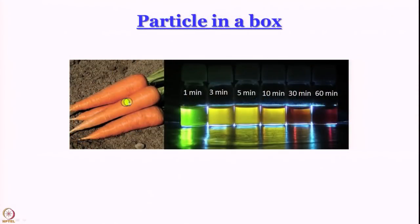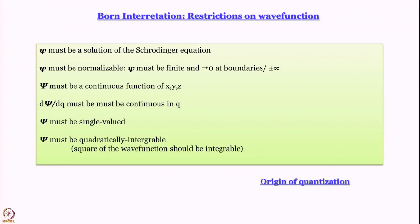Welcome back to the second week of quantum chemistry of atoms and molecules. In the next couple of modules we are going to discuss a rather simple model called particle in a box, which helps us understand several nuances of quantum mechanics. This model also helps us understand the color of carrots and why semiconductor quantum dots — very small nanocrystals — change color upon changing size.